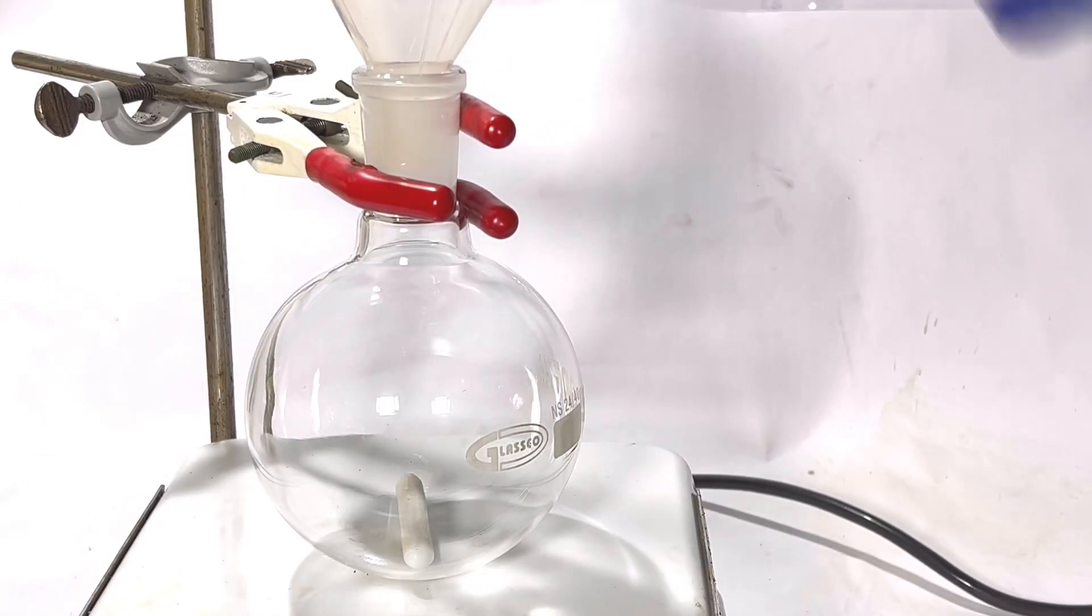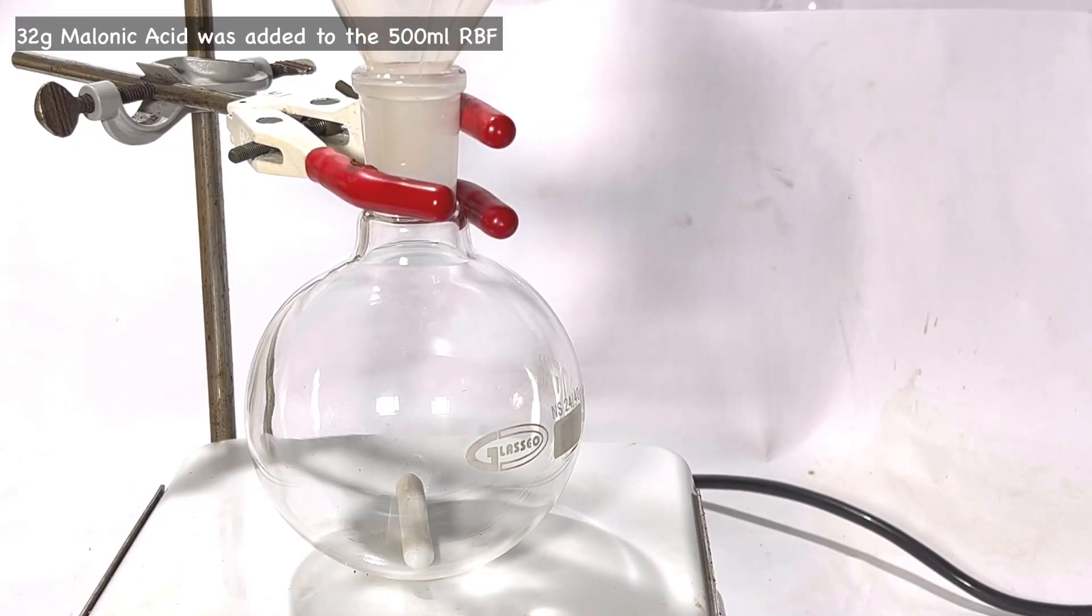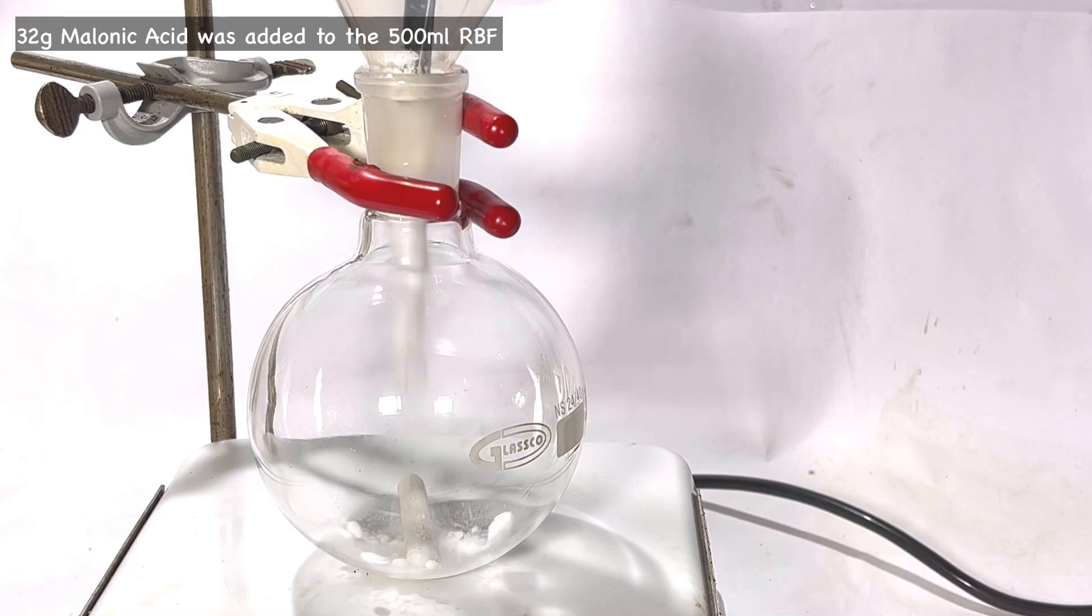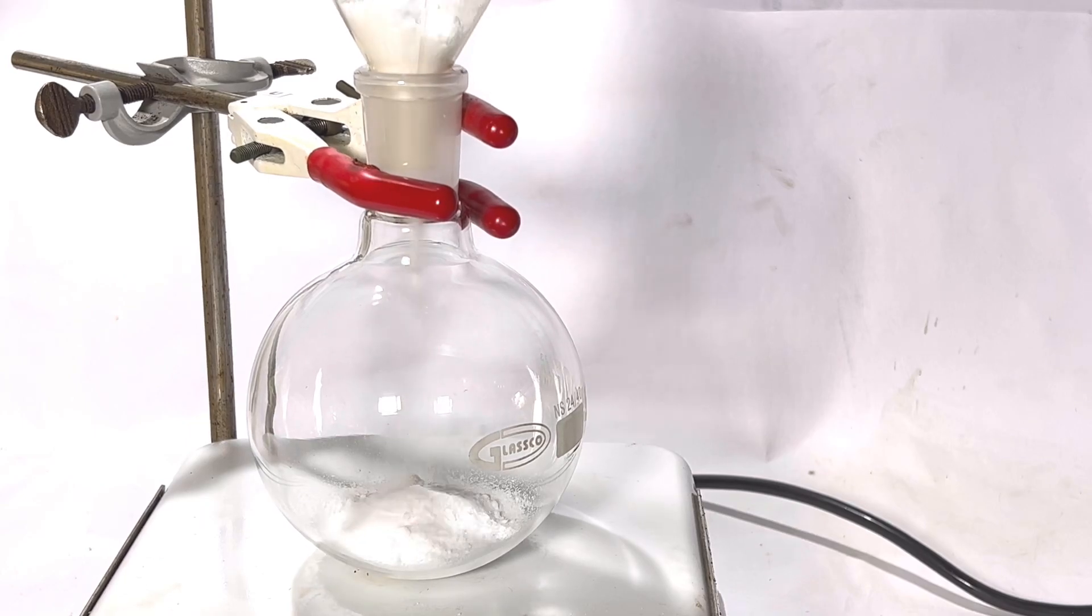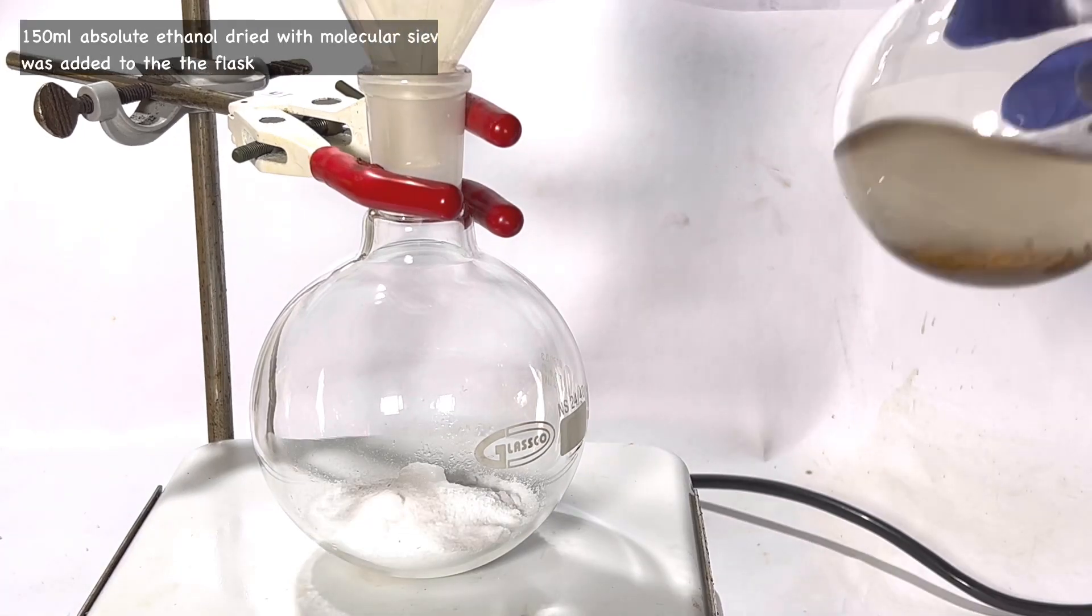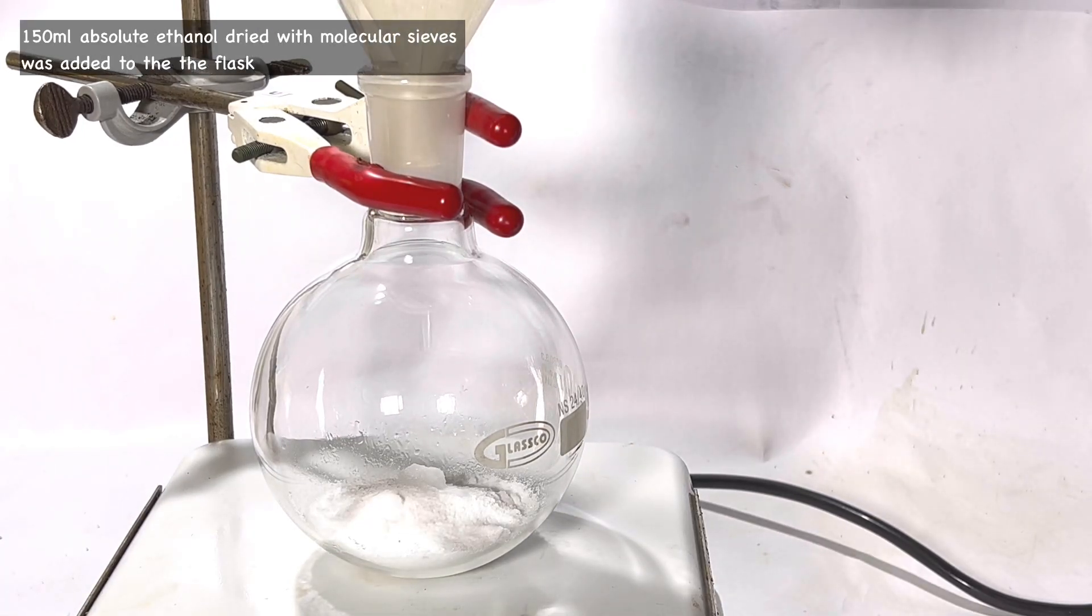Start by fixing a 500 milliliter three-neck round bottom flask on a hot plate with a stirring bar inside. 32 grams of malonic acid was transferred into the round bottom flask using a funnel.